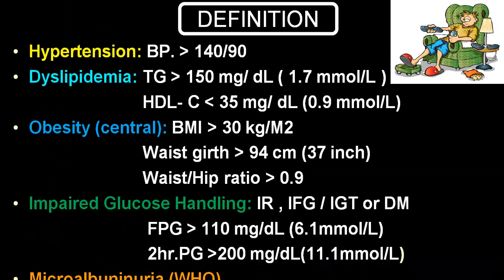By definition, a person who is hypertensive where blood pressure is more than 140/90, with dyslipidemia where TG is more than 150 and HDL less than 35, central obesity where BMI is more than 30, waist girth more than 94 cm and waist-hip ratio more than 0.9, associated with impaired glucose tolerance, insulin resistance, IFG or IGT, or a person who is diabetic where fasting glucose is more than 110 and post-glucose more than 200 — and WHO added microalbuminuria. When all these criteria are present together, that is defined as metabolic syndrome.